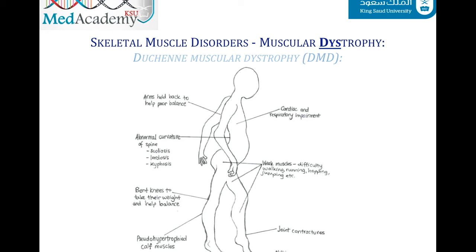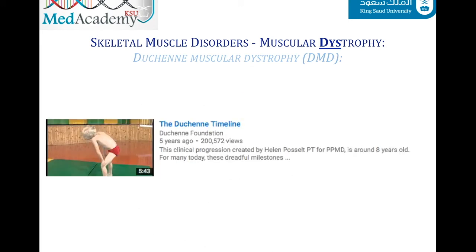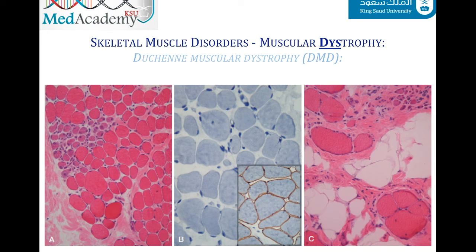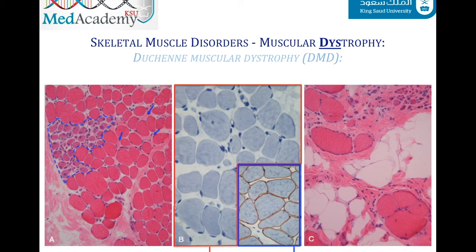Another important feature is enlargement of the calf muscles, called pseudohypertrophy, because the enlargement is caused by fat and connective tissue rather than muscle tissue. Histologically, picture A shows variation in fiber size, a cluster of basophilic regenerating myofibers, and slight endomysial fibrosis. Immunohistochemical staining in picture B highlights membrane-associated dystrophin in brown in normal tissue, with complete absence of staining in Duchenne. Picture C illustrates disease progression with extensive fiber size variation, fatty replacement, and endomysial fibrosis.